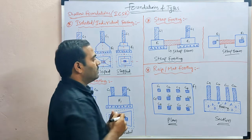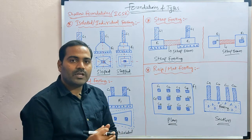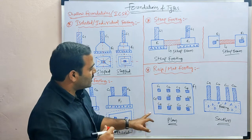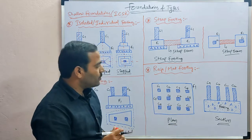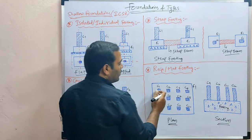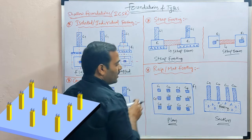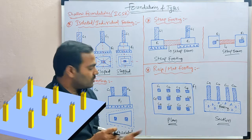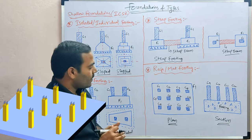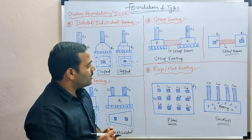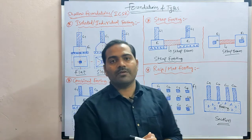Raft or mat footing is used when the soil bearing capacity is very low and the required area of the footing is more. In such cases a complete footing is laid over the entire plot area and different columns are placed on this single footing. All columns are laid on one footing spread throughout the plot area — this is called raft or mat footing.